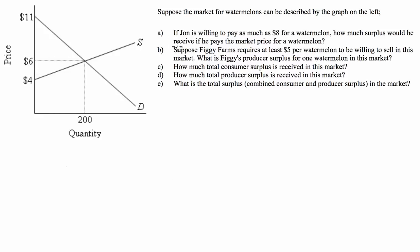Part A is asking us: if John is willing to pay as much as $8 for a watermelon, how much surplus will he receive if he pays the market price? This goes straight into consumer surplus. Consumer surplus is the difference between the maximum John is willing to pay and the price that he actually pays.